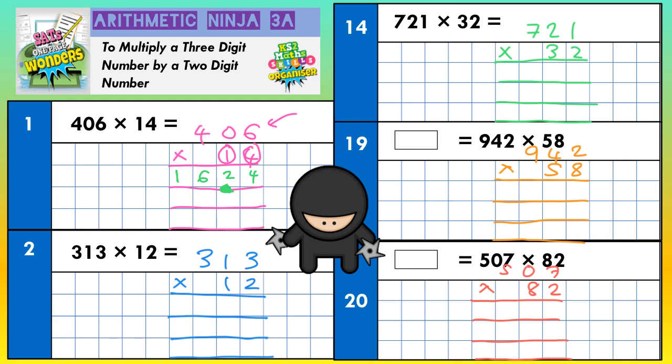Now let's do the middle line. The middle line is for dealing with this 1 here, but this 1, don't forget, means 10 — because it's in the tens column. So times by 10: you put your magic zero in, and then just times everything by 1. Because you've got the magic zero on the end, it is then the same as timesing by 10.